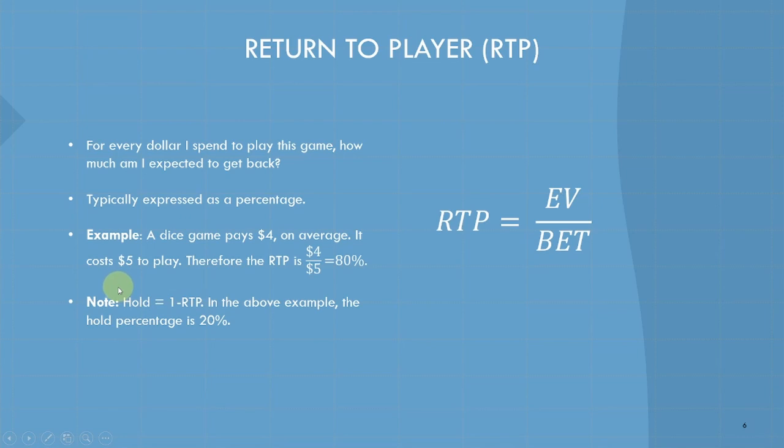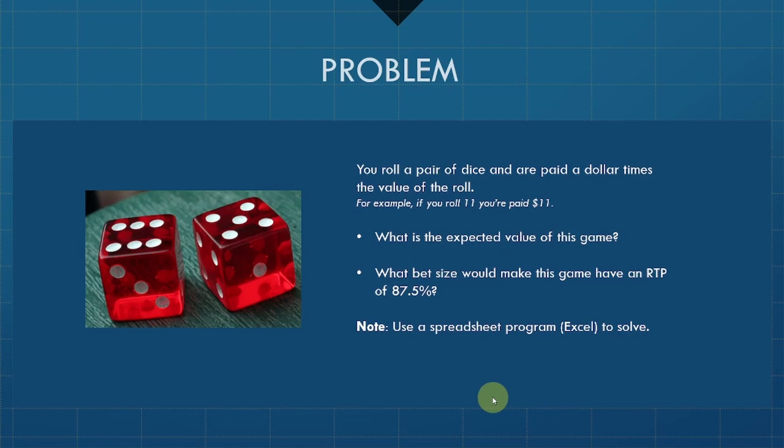Occasionally, you may hear the term hold percentage. Operators, such as casinos, tend to use this term more often, but it's really just the same thing as RTP, just inverted. Hold is one minus RTP. We're not going to use this term throughout the course, but in case you encounter it, you should know what it is. Before we end this lecture, I have an assignment for you. It's a problem I want you to work through using the concepts we've learned.